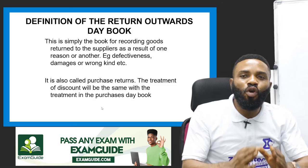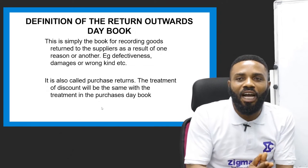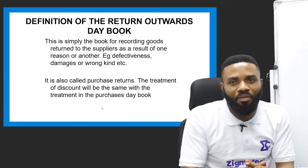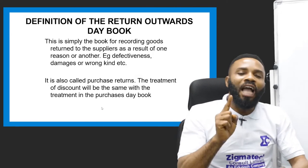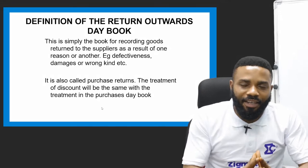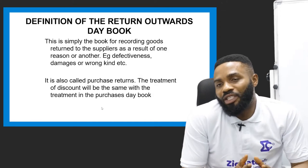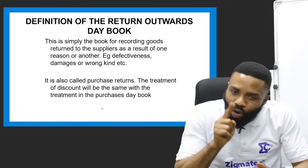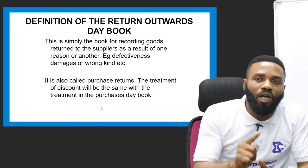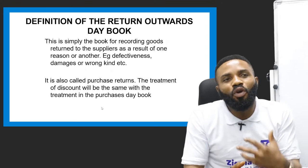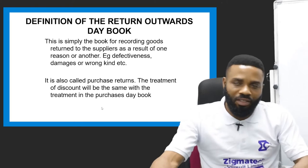If goods worth 500,000 were bought and you are returning 200,000, that 200,000 will affect the 500,000 worth of goods you initially purchased. Subtracting your returns outwards from your purchases leaves what we call the net purchases. This is also called purchase returns — the treatment of this account is the same as in the purchases day book, because returns outwards will always affect your purchases.